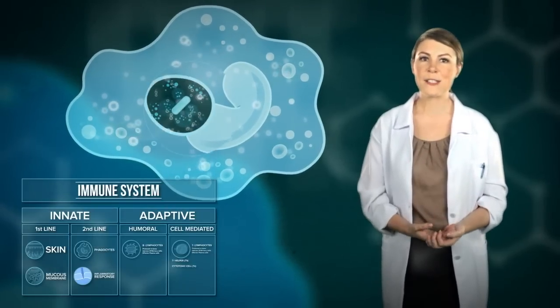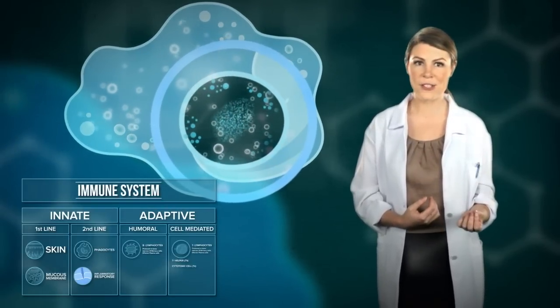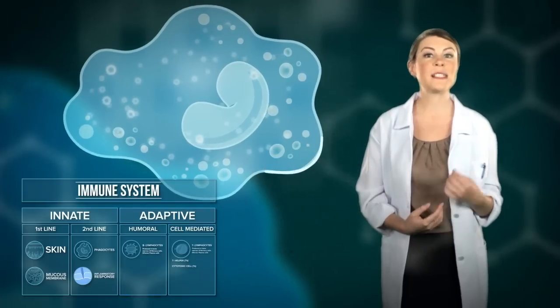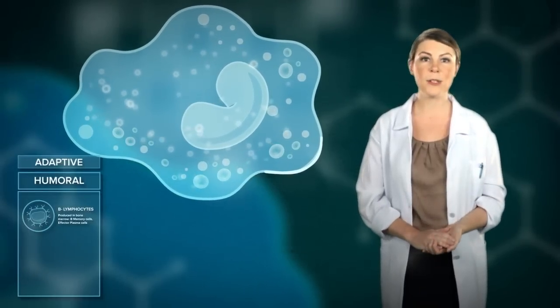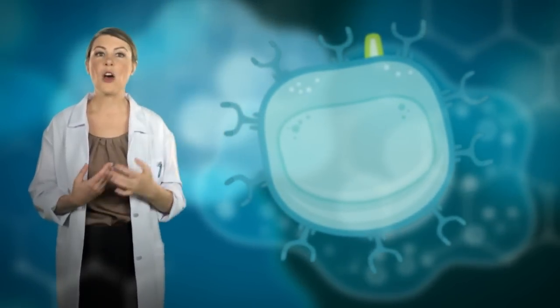While phagocytes will indiscriminately attack any pathogen, the body also recognizes and deals with specific pathogens through adaptive immunity. The heroes of the humoral response are B lymphocytes, or B cells.